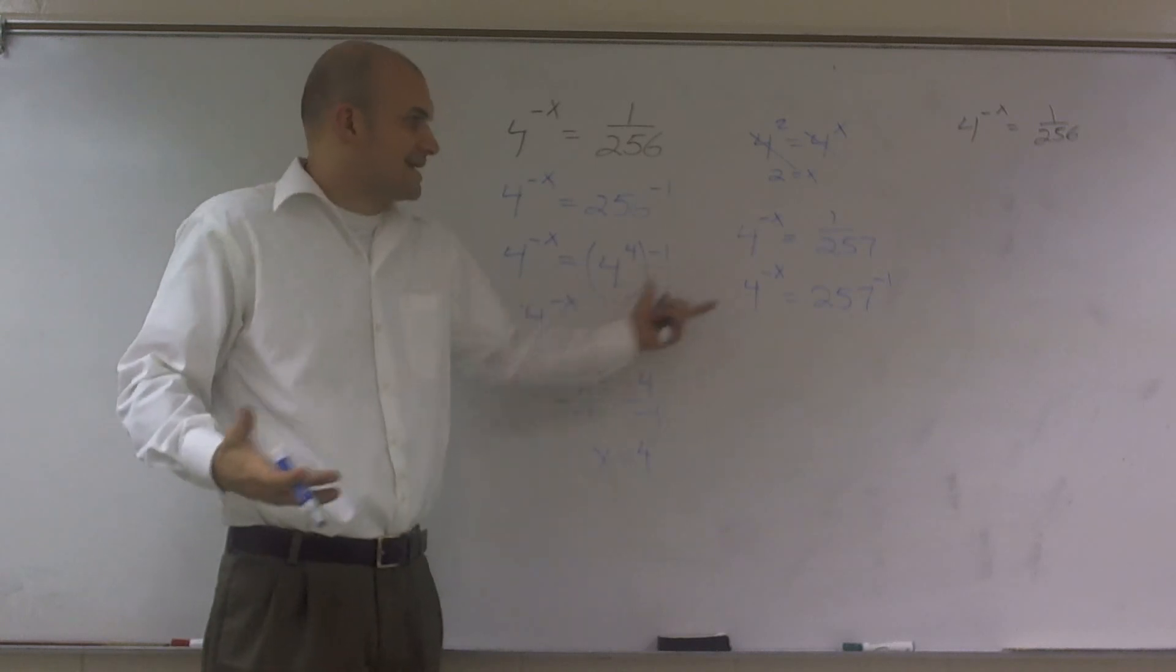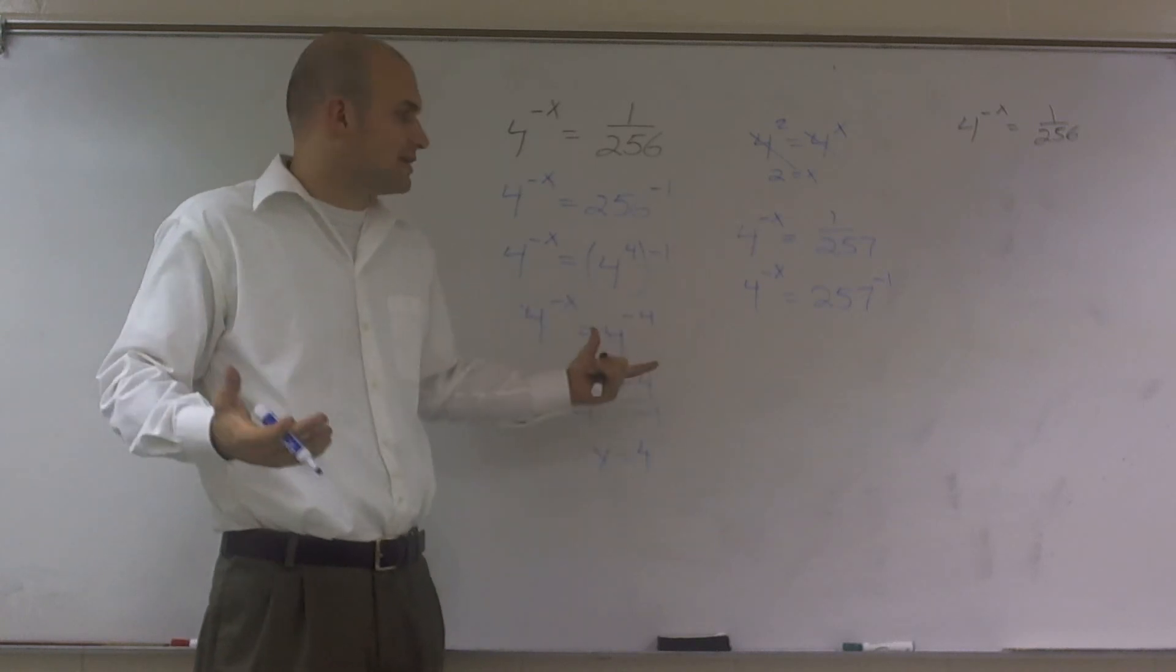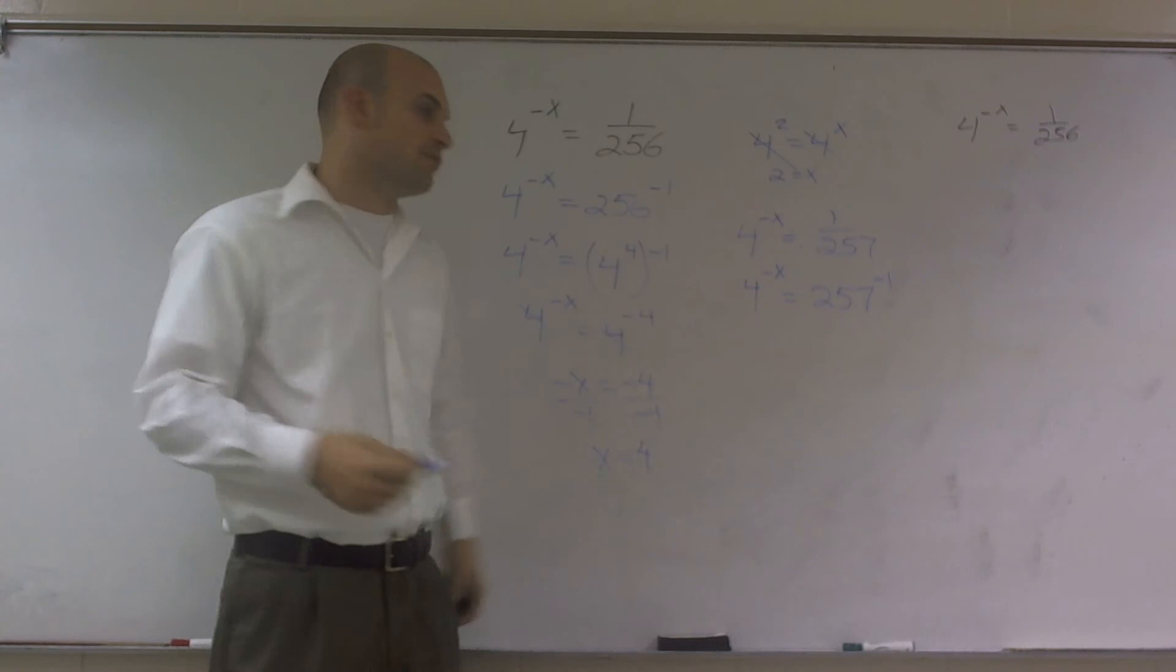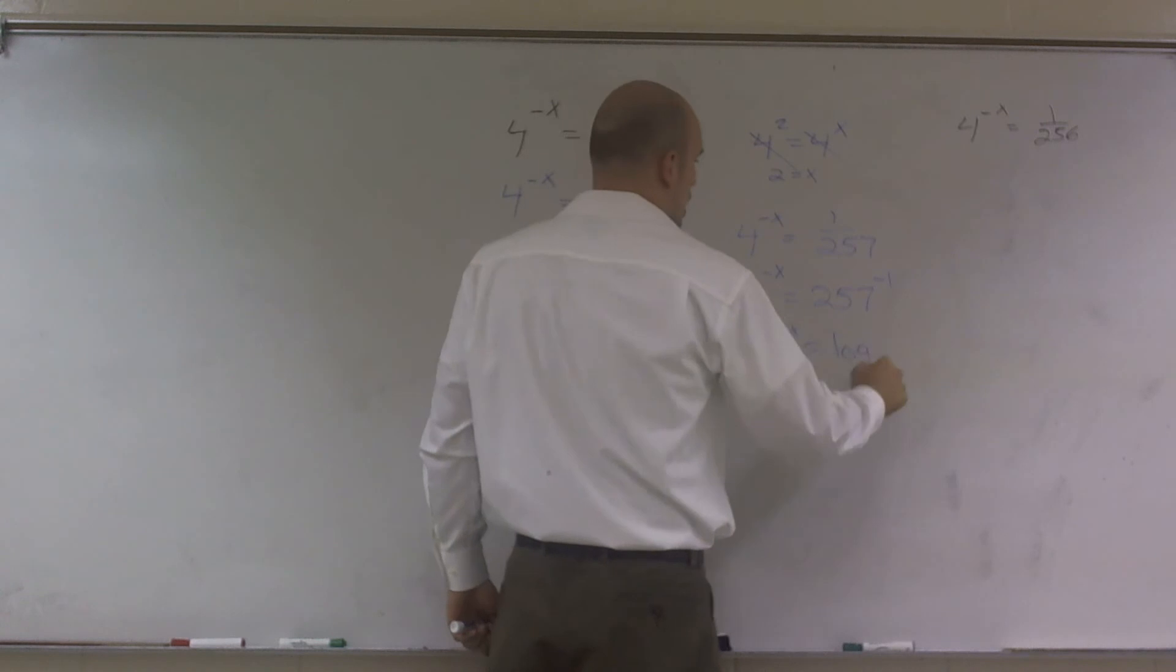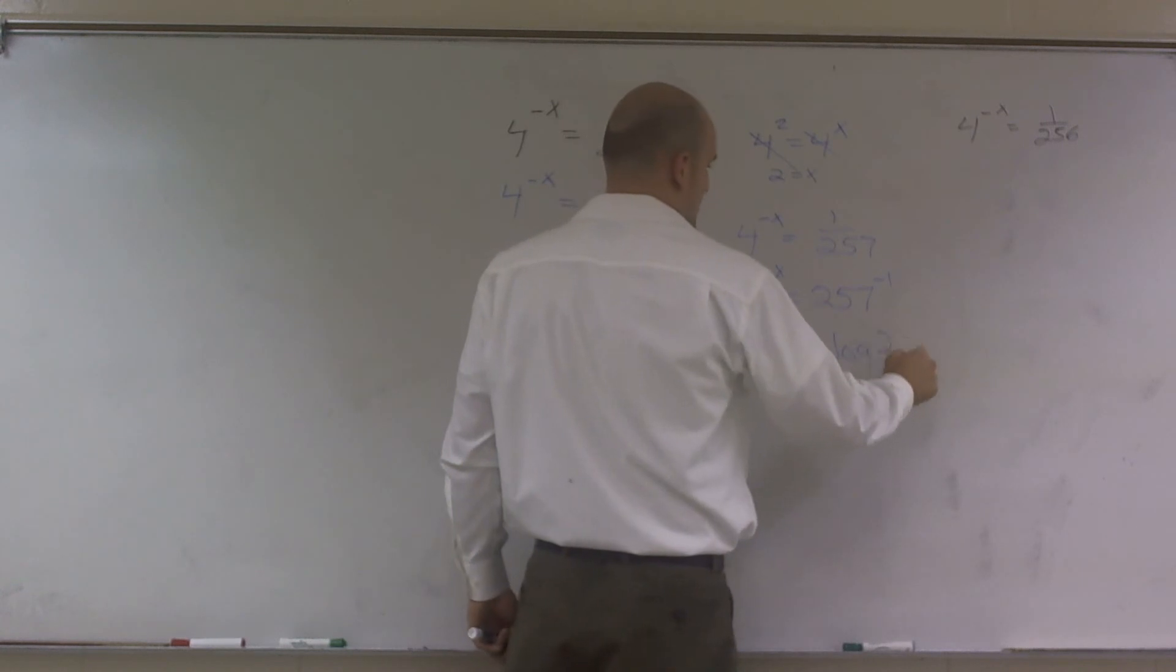However, here I can't get rid of this anymore, right? But what I could do is I could take the log of both sides. So if I took the log of 4 to the negative x equals log of 257 to the negative first power.